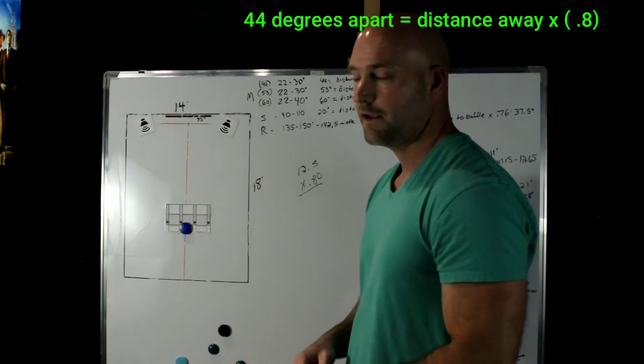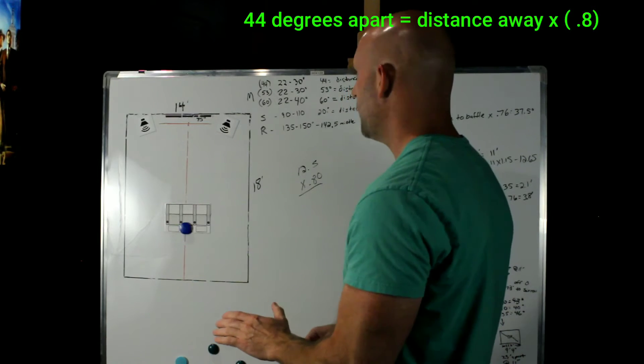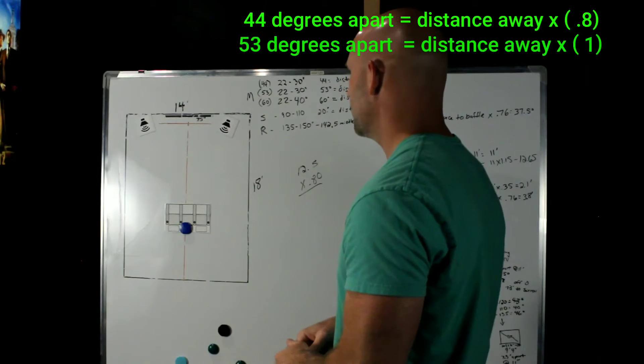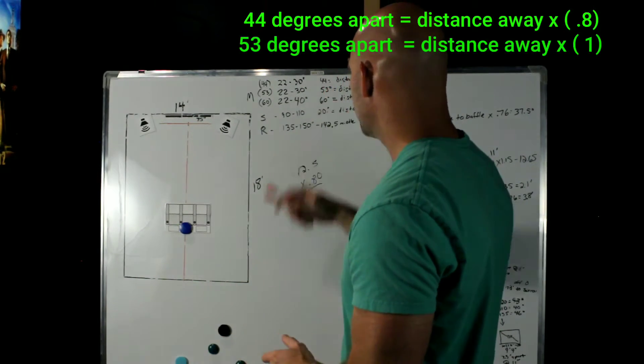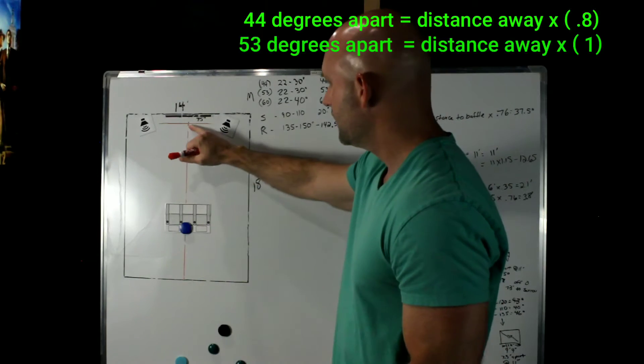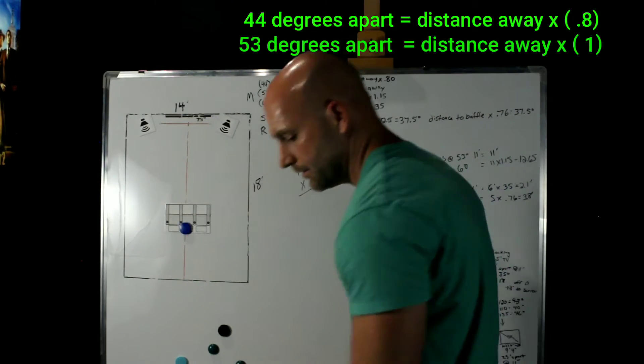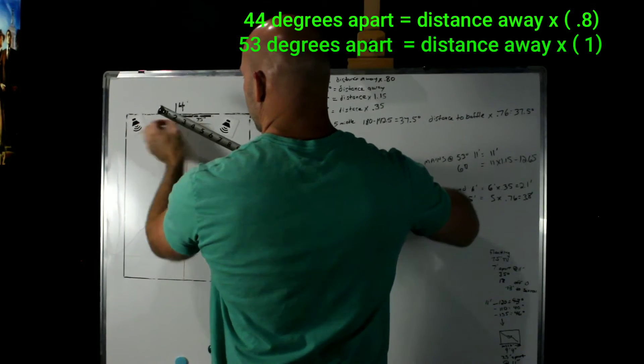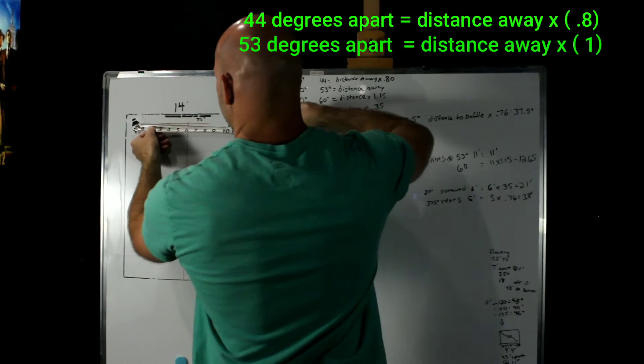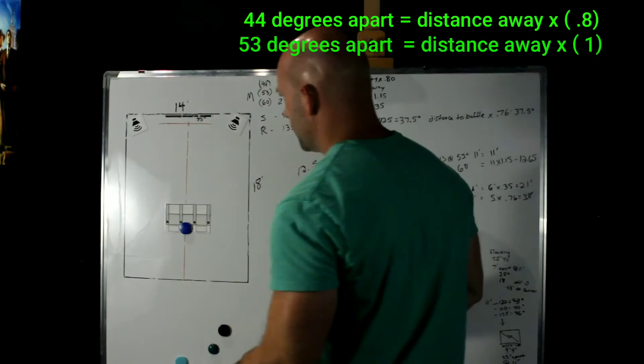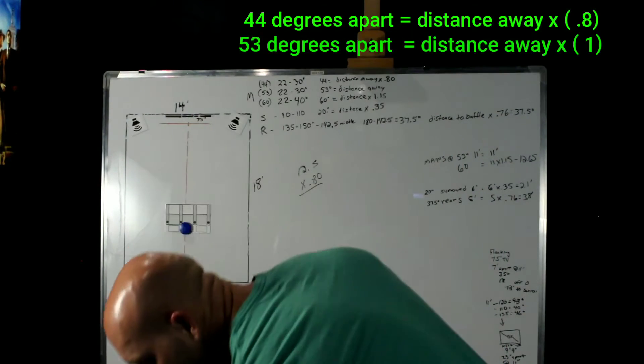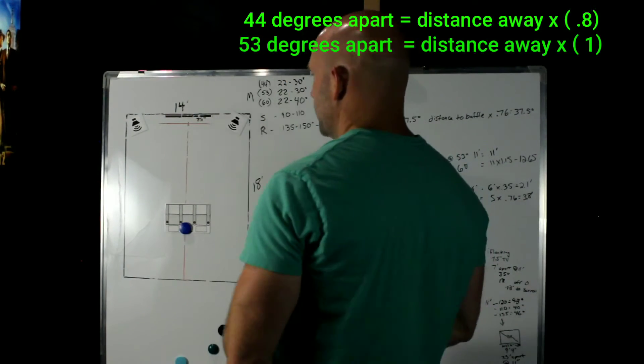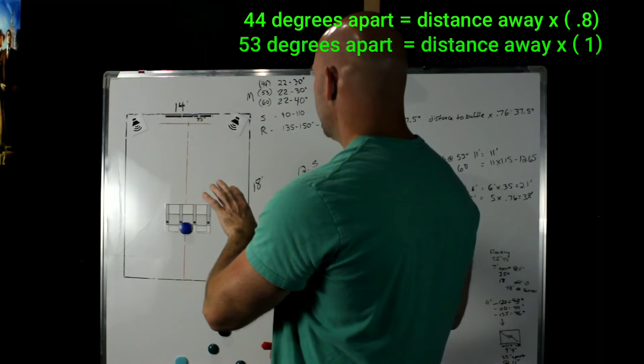So we've got these speakers at 44 degrees apart. Now we do want to be a little bit wider than that. We really want them at 53 as our minimum. So 53 is really easy. It's a distance away. So if we were 11 feet from this point, our mains just need to be 11 feet from the center of one to the center of the other. And that's about it right there. So this is really going to be where we want to be for our minimum.